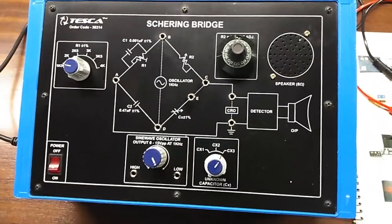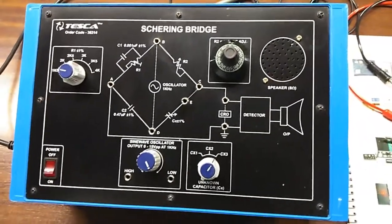Today, we are going to show you our Schering Bridge Trainer Kit, order code 36314.